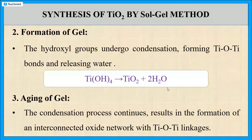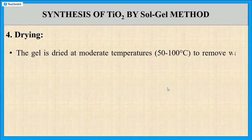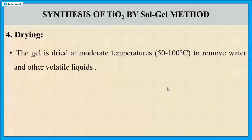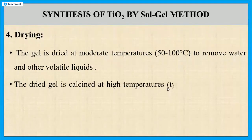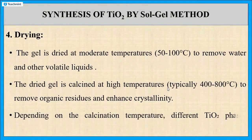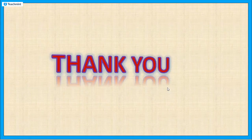The fourth and last step is drying. When we dry the gel at 50 to 100 degrees Celsius, the water and other volatile liquids are removed from the gel network. In order to remove organic residues, the dried gel is calcinated — heated at high temperature. Depending on the calcination temperature, different titanium dioxide phases like anatase, rutile, or brookite can be obtained.